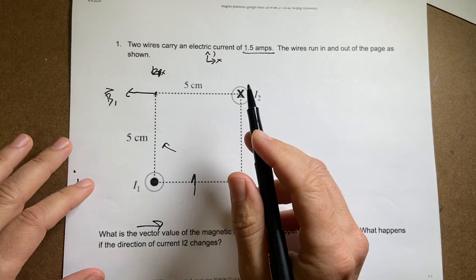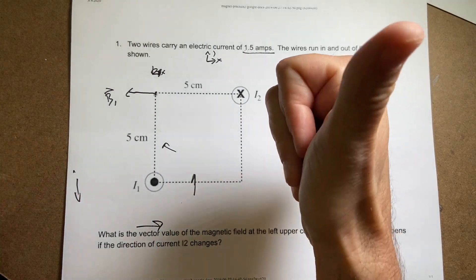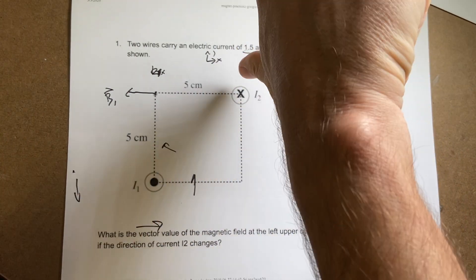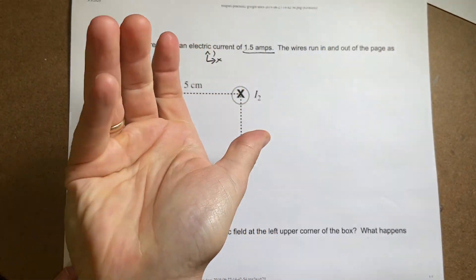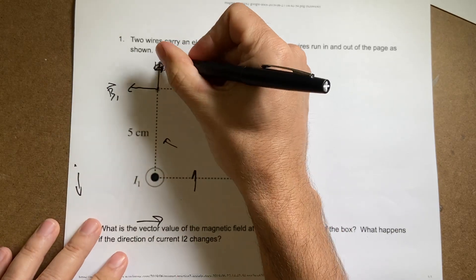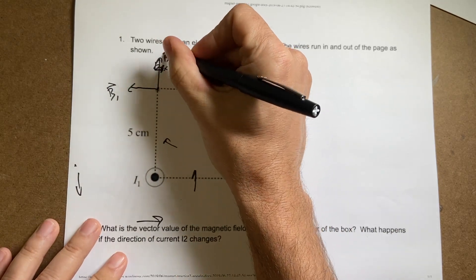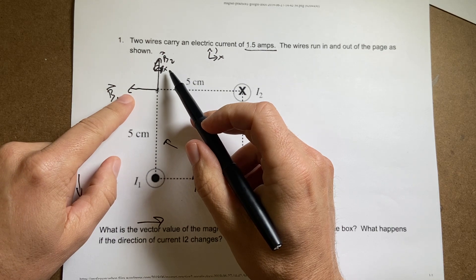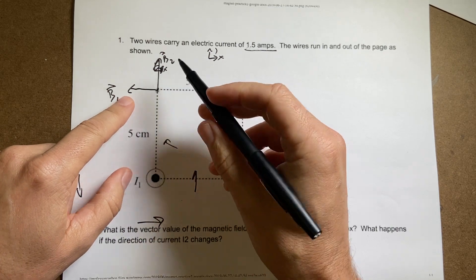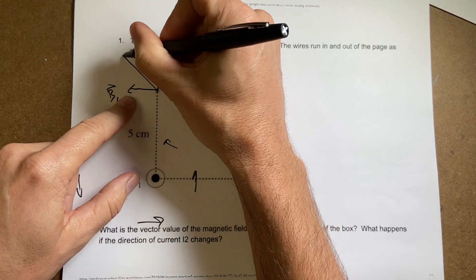Now let's do the same thing for this one. In this case, I take my thumb and put it in the direction of the current, which is down. So you can see the direction my hand rotates around. It'd be going up. B2, like that. So once I find vector values for B1 and B2, then I can find the total vector, which is just going to be like this.